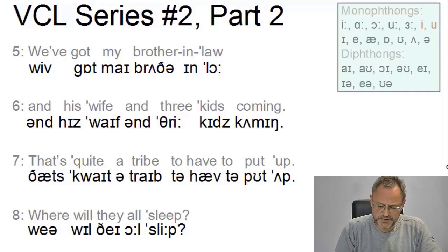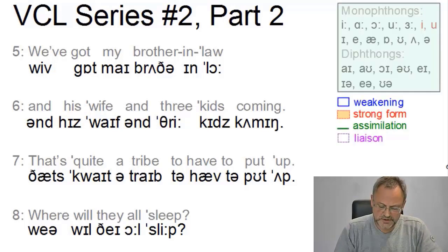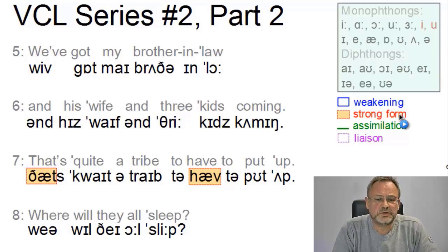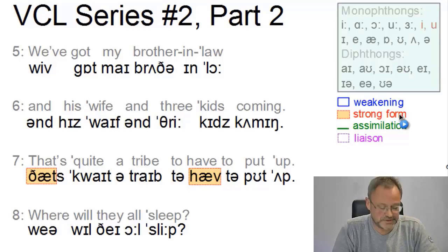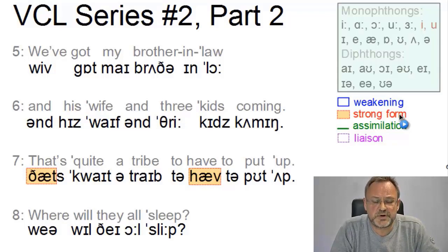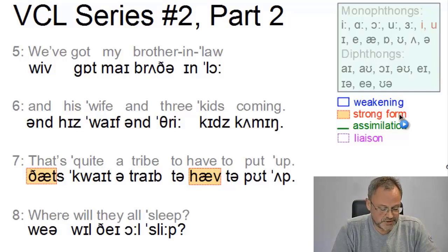In line seven it's quite interesting that we have two strong forms: 'that's' and 'have'. These are monosyllabic function words which can be weakened, but 'that' is normally only weakened if it is a conjunction — here it is a demonstrative, so it doesn't occur in its weak form. And 'have' is only used as a weak form when the word functions as the perfective auxiliary. Here it doesn't — here it is the equivalent of 'must', so it occurs in the strong form.